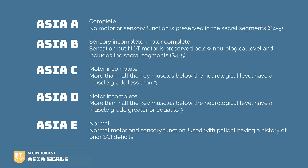ASIA A is no sensory and no motor — complete. ASIA B is sensory but no motor — incomplete. ASIA C and D are differentiated by how many muscles have strength either less than or greater than grade three. If more than half of the muscles are less than grade three — say grade two — it would be ASIA C. If more than half of the muscles are greater than grade three, then it would be ASIA D, which is less involved.